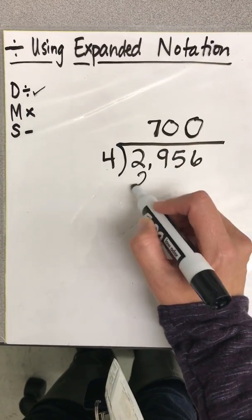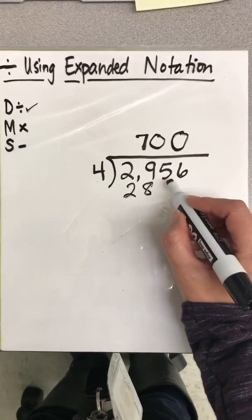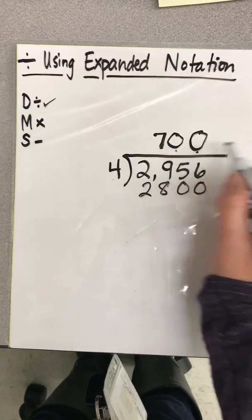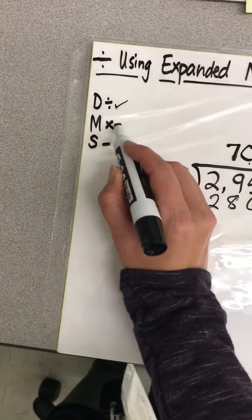So this would be seven times four, which is 28. And then we'll add the two zeros from the 700. And that was the multiply step.